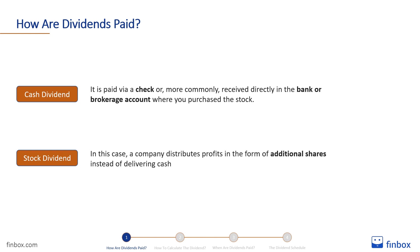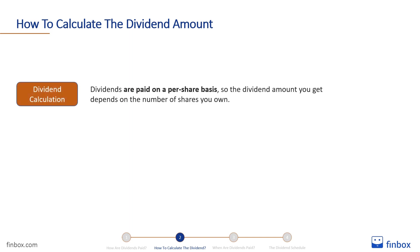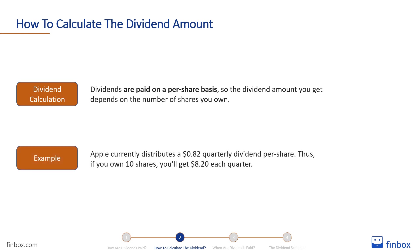Let's see how you can calculate the dividend amount you are entitled to. Dividends are paid on a per-share basis, so the dividend amount you get depends on the number of shares you own. For example, Apple currently distributes a $0.82 quarterly dividend per share. Thus, if you own 10 shares, you'll get $8.20 each quarter.